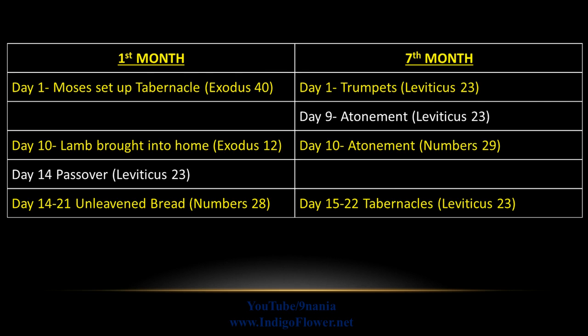It doesn't matter where you are on the planet — when you are observing the turn, so is everyone else. Whether you are in the first month or the seventh month, everybody is observing the turn of the year at the same time. So first fruits in the northern hemisphere would be the harvest in the southern hemisphere and vice versa.